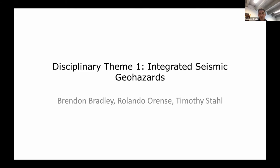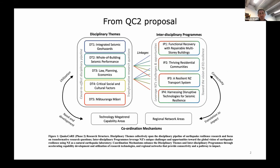I'm going to start with a few sentiments about disciplinary theme one as a whole, and then Tim and Rolly will also add some of their sentiments pertaining to the specific parts of the DT1 program that they're leading. Within the QuakeCore 2 proposal, there are really two primary parts of the research structure: the disciplinary themes, and there are five of those. Today we're going to be talking about DT1 in the top left-hand corner, and then there are four additional interdisciplinary programs.